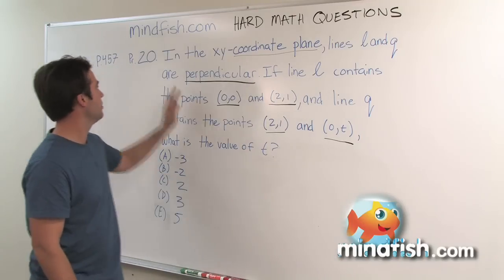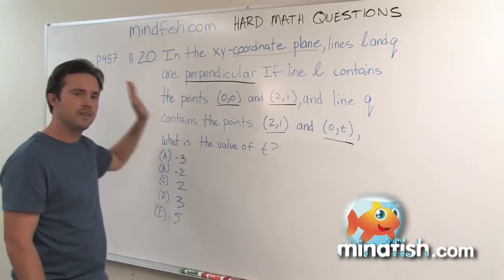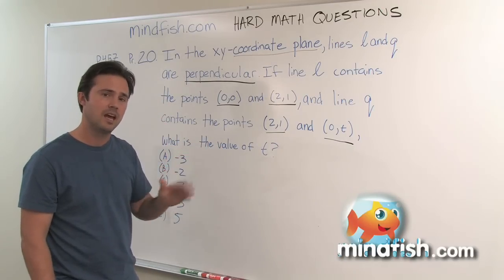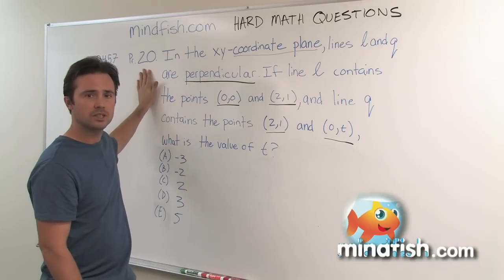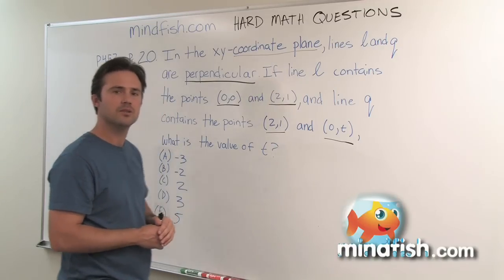So this question here is on page 457, it's problem number 20. Now keep in mind on the SAT math the questions do get harder in order, do get more difficult as they get later into a section. So question 20 we would expect this to be a hard question and that's an important thing for you to understand. The questions at the end will always be more difficult in the SAT.